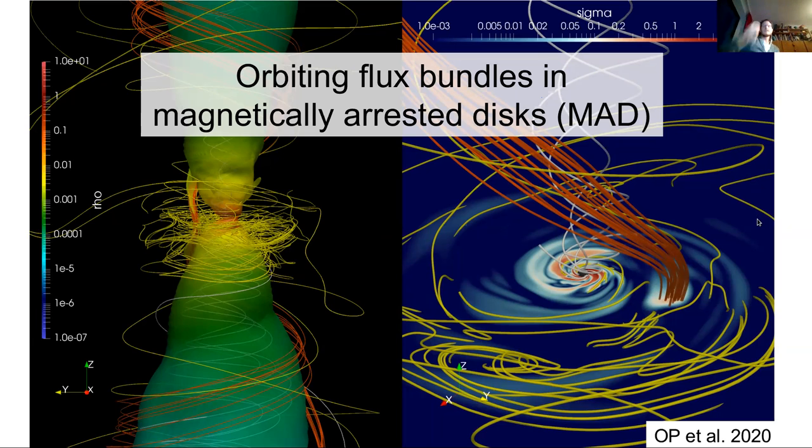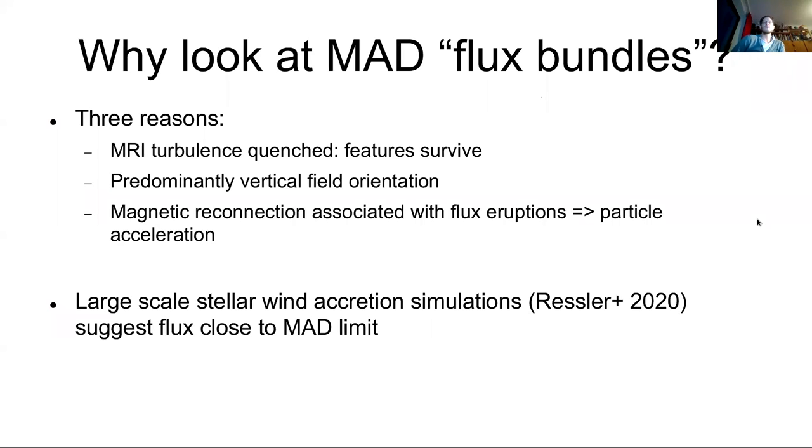So these are these flux tubes. And it's just interesting to ask what is the dynamics and can it kind of be compared to what we've seen with gravity? So why look at the MAD flux bundles in particular? So there's three reasons. The magnetically rotational instability is really quenched. These features can in principle survive. How long they can survive? That is not so easy to answer. So we have to simulate that.